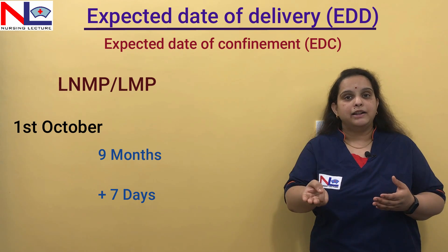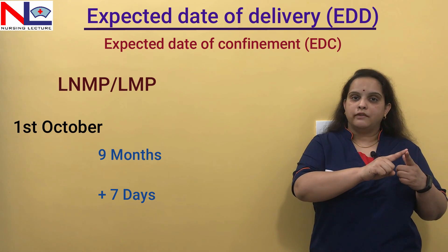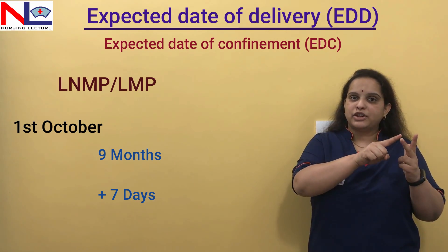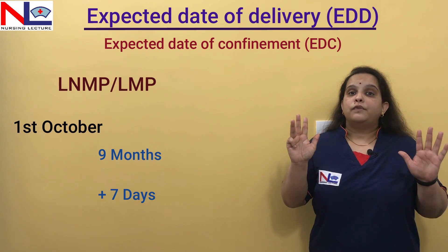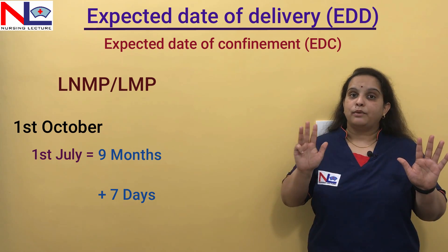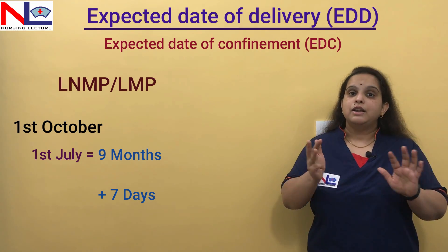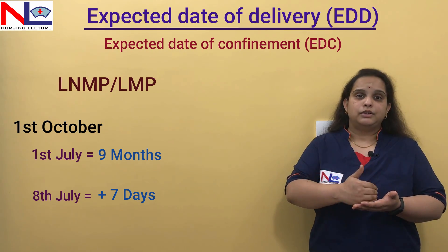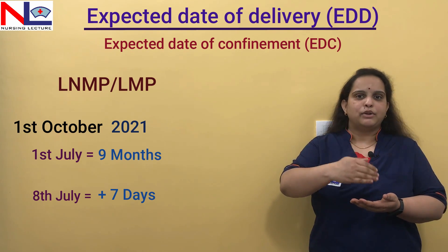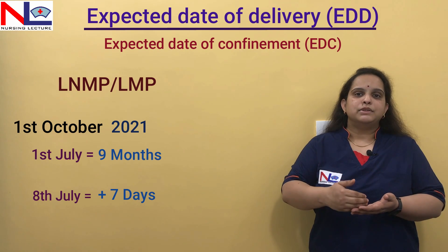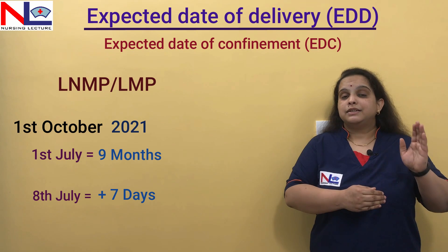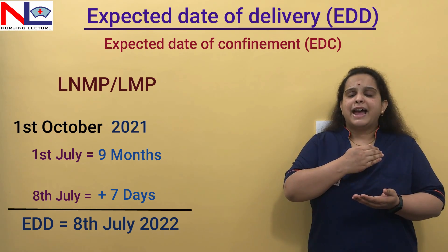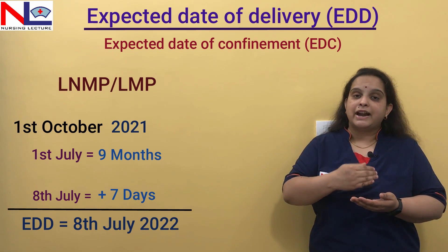From the LNMP, we calculate nine months forward and then add seven days. So from the 1st of October to the 1st of November is one month, then December, January, February, March, April, May, June, July — so the 1st of July gives us nine months. Adding seven more days gives us the 8th of July. If your LNMP is 1st October 2021, then your EDD would be 8th July 2022, because passing through December shifts the year forward.